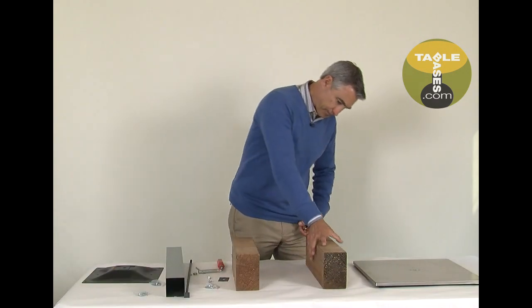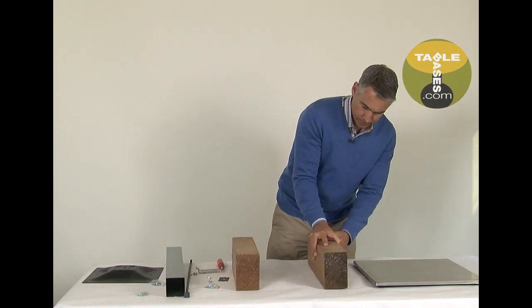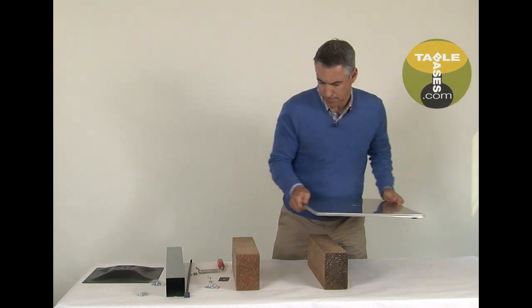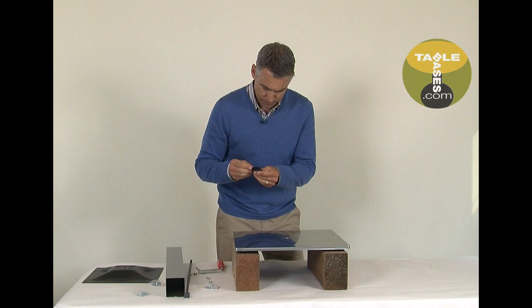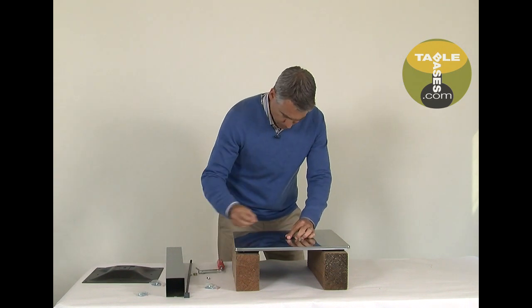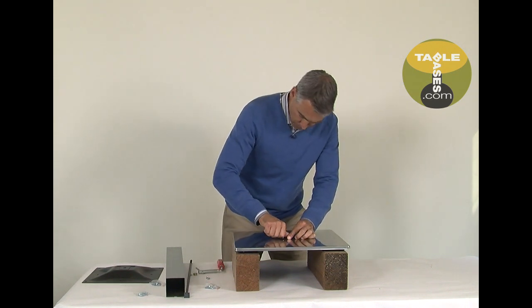We recommend that you use two blocks. First, set the two blocks about a foot apart. Set the base bottom on the blocks. Attach the retention plate to the base bottom using the two small screws.